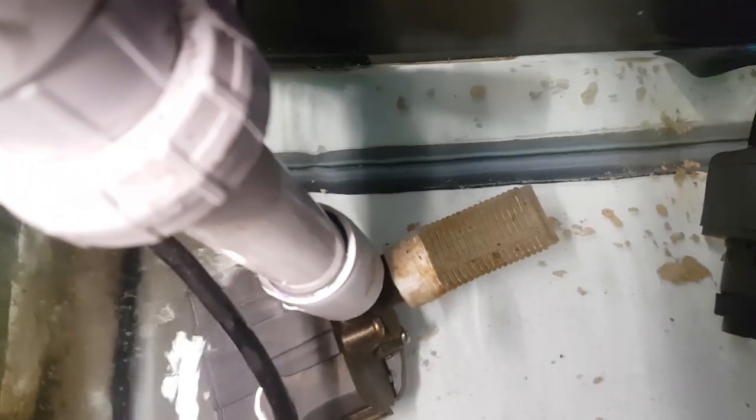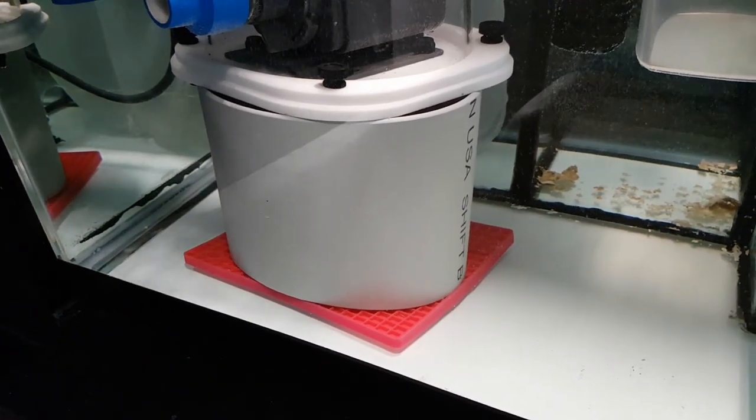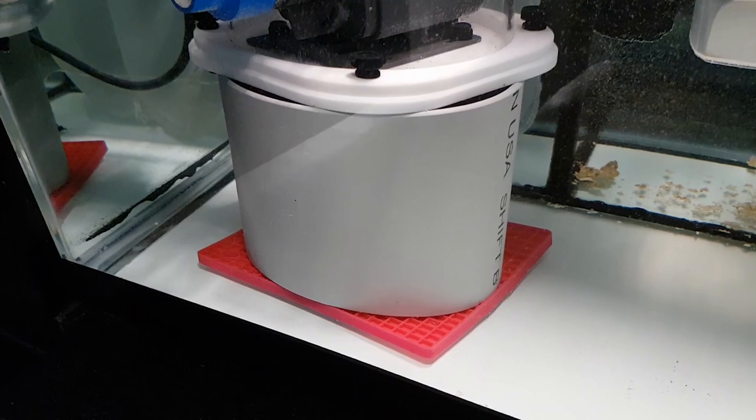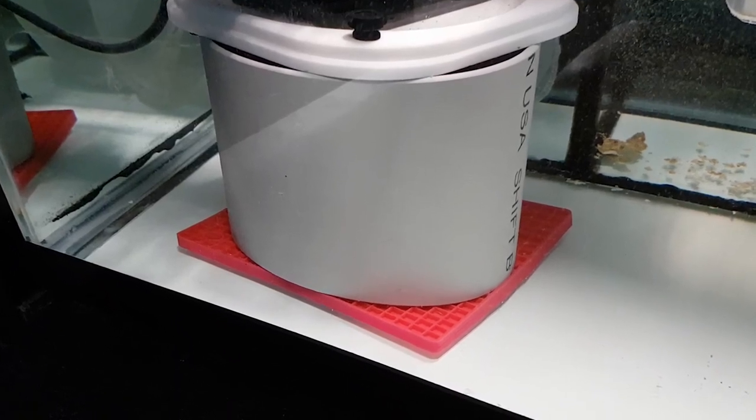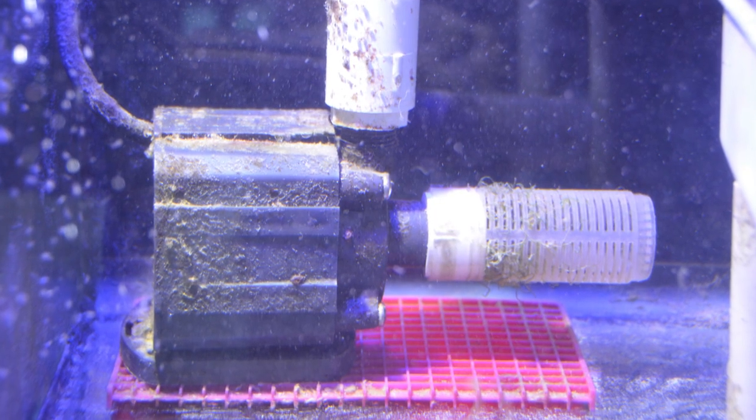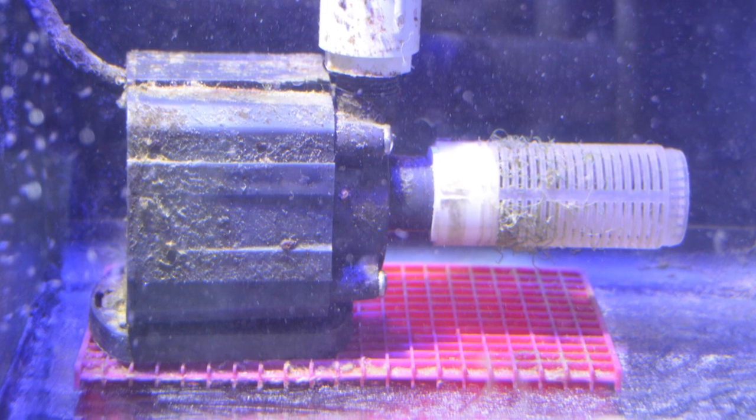The first technique is simply to put a silicone mat underneath your pumps. This prevents the vibrations from transferring from the pump to the glass. Here you can see I've placed some under both my skimmer and in this older photo my return pump.